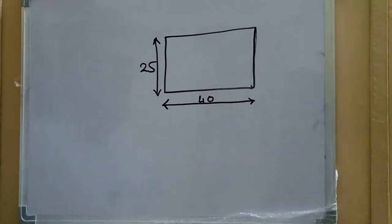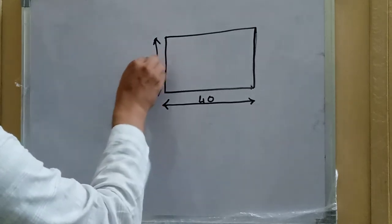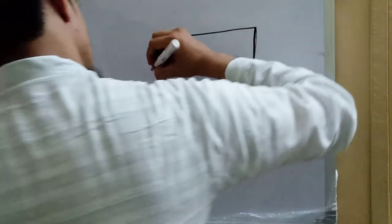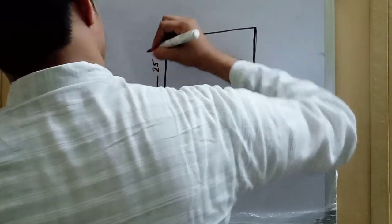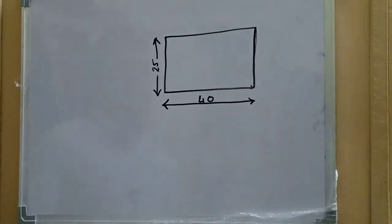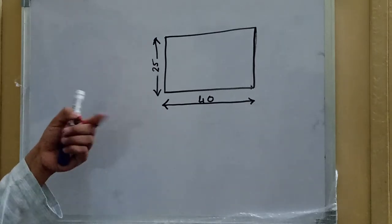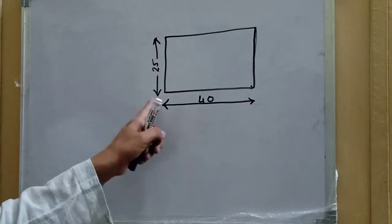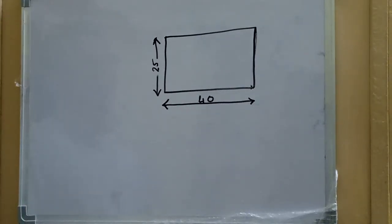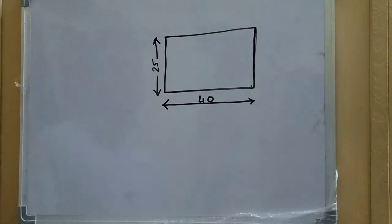On the other hand, for aligned dimensioning, a vertical dimension is written vertically — so this is 25 — and a horizontal dimension is written horizontally — so this is 40. In this way we can differentiate: in unidirectional dimensioning only one direction is used, while in aligned dimensioning the direction of writing is aligned with the direction of the dimension.